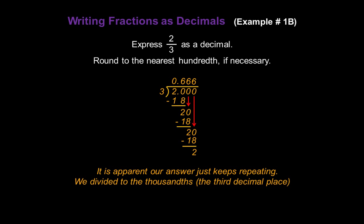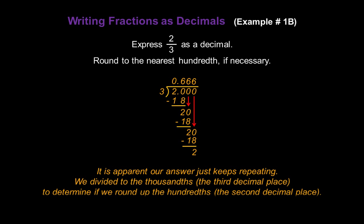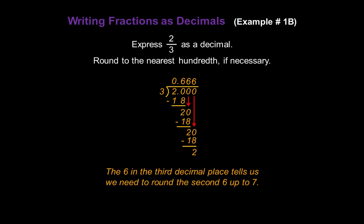We divide to the thousandths — the third decimal place — because I need that to determine whether to round the hundredths place. The 6 in the third decimal place tells us we need to round the second 6 up to a 7. So our answer becomes 0.67. 2 thirds expressed as a decimal is 0.67.